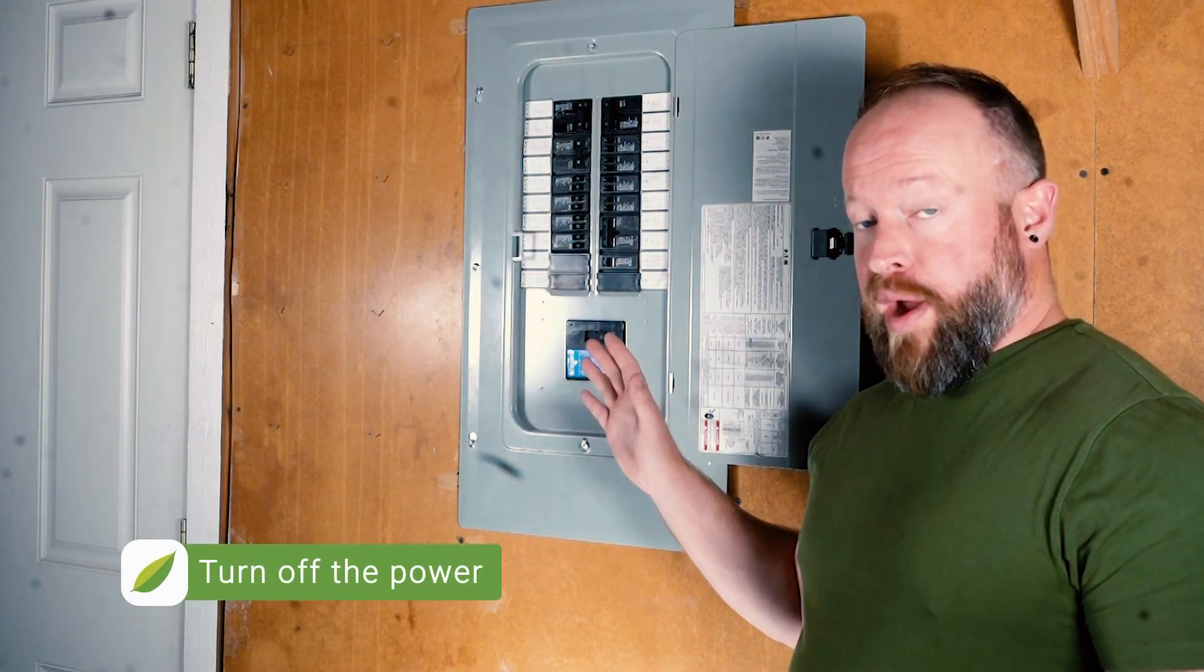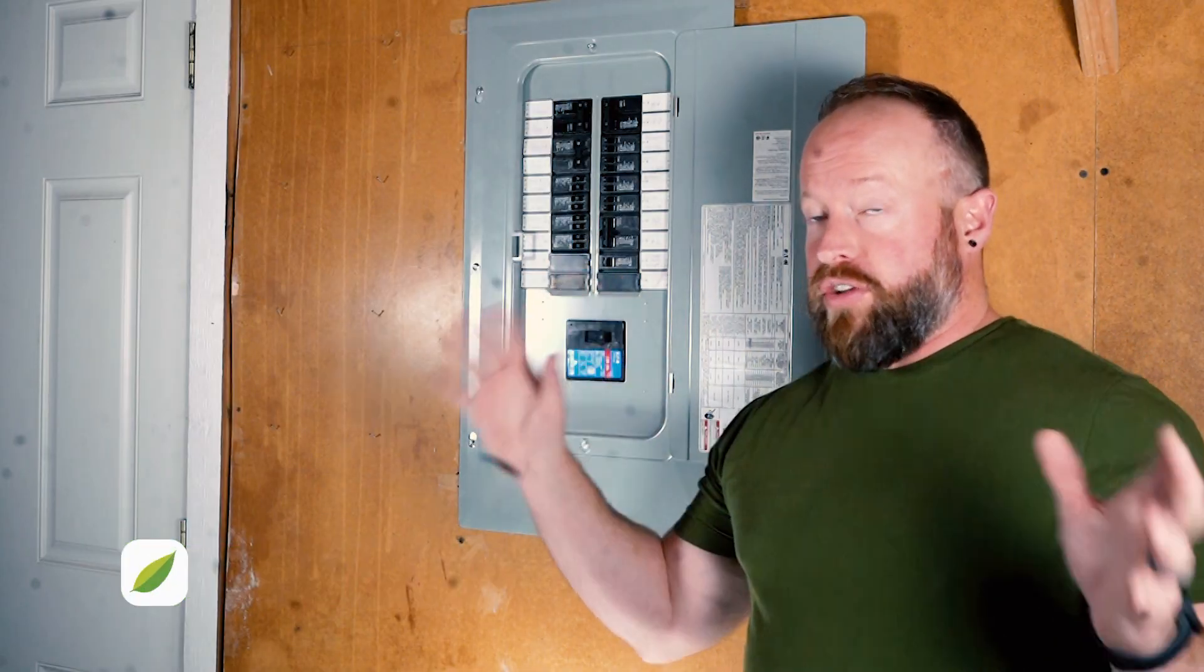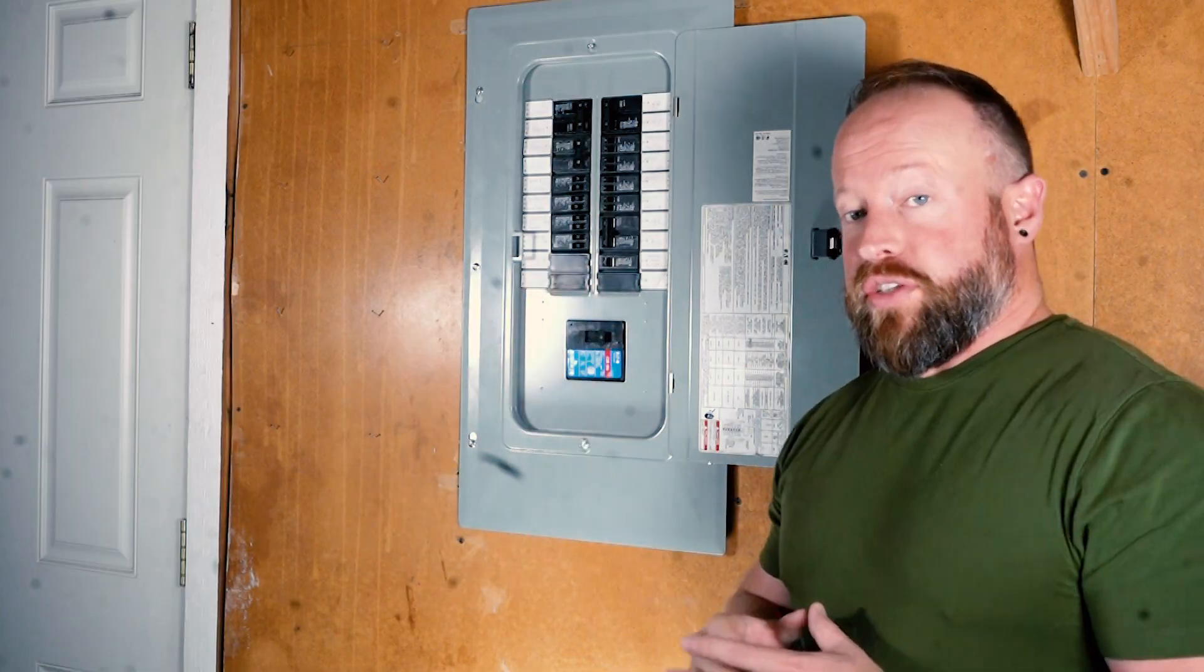The first step is to turn off power in all of your breakers. Make sure you have an alternate light source if you're going to lose light in the area you're in.